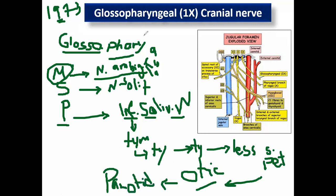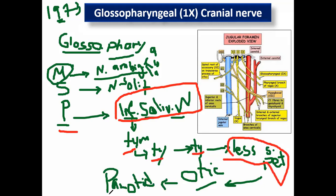Again: the parasympathetic pathway here goes from the inferior salivary nucleus, to the tympanic branch, forming the tympanic plexus, then the lesser petrosal nerve — different from the greater petrosal. The greater petrosal from the facial nerve supplies the nasal gland, lacrimal gland, and palatine gland. But here it is the lesser petrosal nerve to the otic ganglion — the parasympathetic ganglion of the glossopharyngeal — to supply the parotid gland.